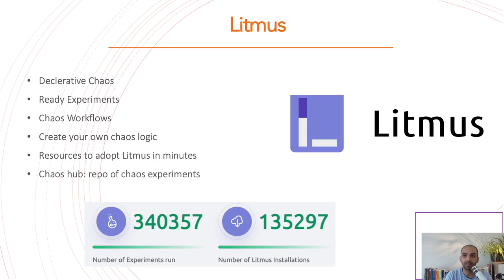The next tool you can implement yourself in your cluster is Litmus. It offers chaos in a declarative way, which is great if you have GitOps practices — it stays in line with the rest of your infrastructure. It has many experiments already packaged, plus a Chaos Hub where the community creates and shares new experiments you can download and use. You can also write your own custom chaos logic in common languages like Go or Python. There are short videos to help you adopt Litmus quickly, without a steep learning curve.